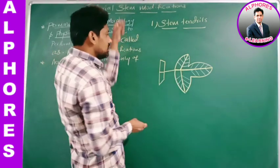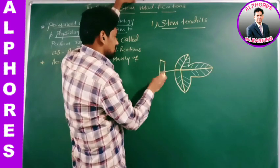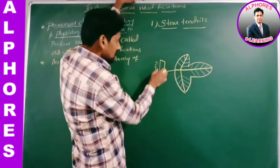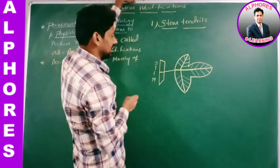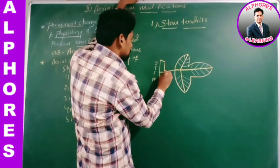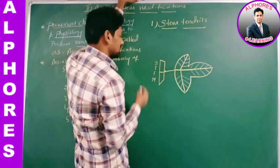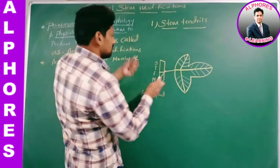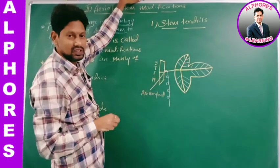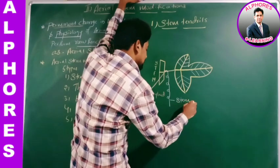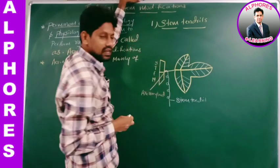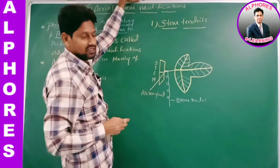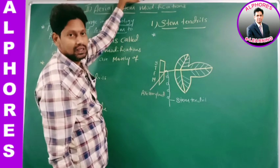See this diagram. This is a stem, and this is a leaf. The upper angle between the stem and leaf is called the axil. This axil contains the axillary bud. This axillary bud develops into a tendril — a stem tendril. Stem tendrils are wiry, coiled, and sensitive structures.